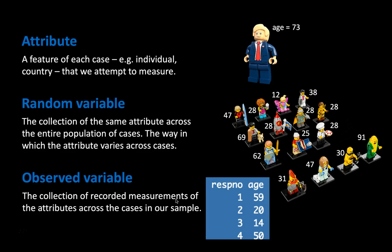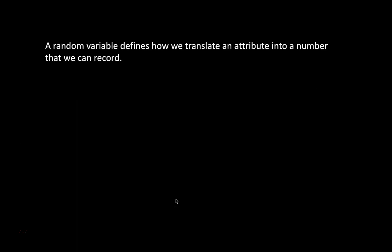I described a random variable as how a value varies across a population — for example, age. A slightly more precise definition is how we translate a value on an attribute into a number in our data set. So a random variable defines how we translate an attribute into a number that we can record. A data set in the end only consists of numbers.